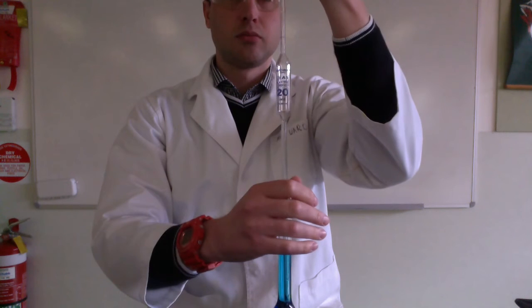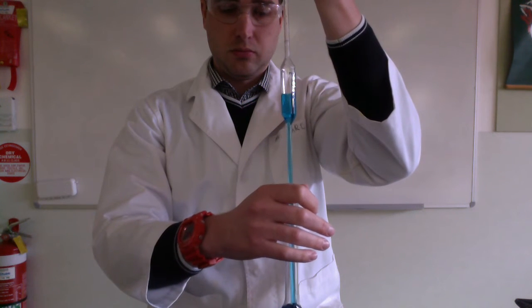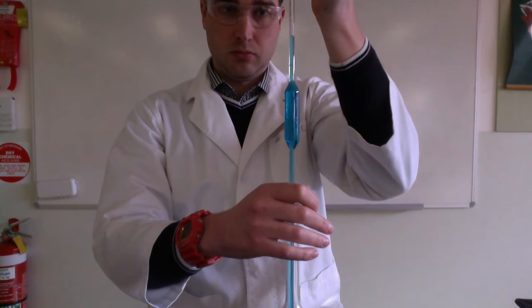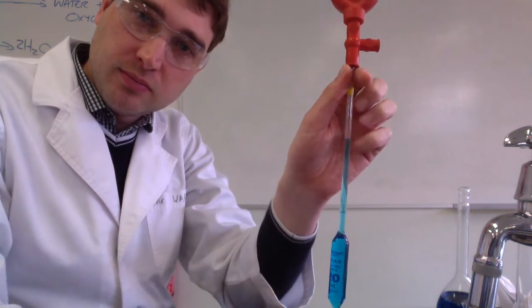Very carefully insert it into the neck of the volumetric flask and start sucking up your liquid. When you're sucking up, make sure you go well above the blue line. We're doing this over a sink so we don't spill anywhere. Look, I'm well above the blue line.